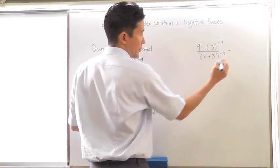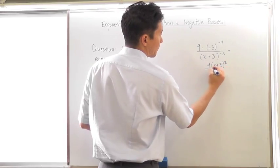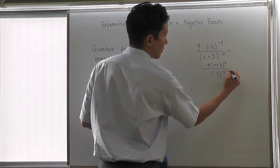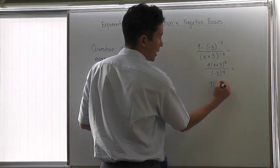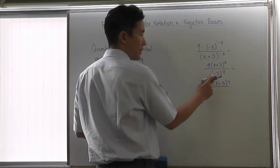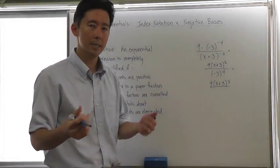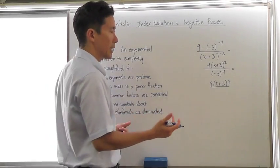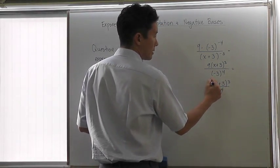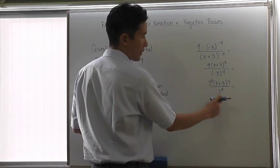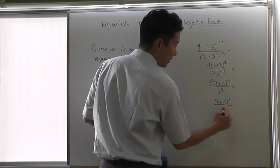Let's simplify this. First, eliminate all the negative exponents. This gives us nine times x plus three raised to the third, all divided by negative three raised to the fourth. We can write this as nine times x plus three raised to the third, all divided by negative one times three raised to the fourth. The negative one to the fourth is just one — because negative one times negative one times negative one times negative one equals one — leaving three to the fourth. We can then change nine to three squared, cancel the common factors, and we get x plus three to the third, all over three squared, which is nine.